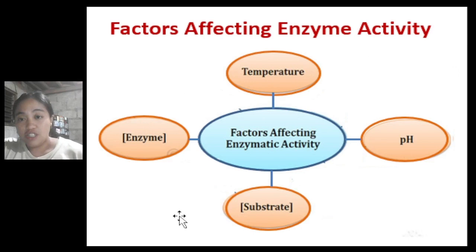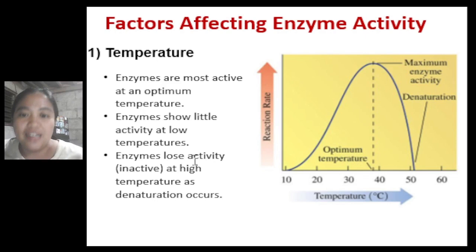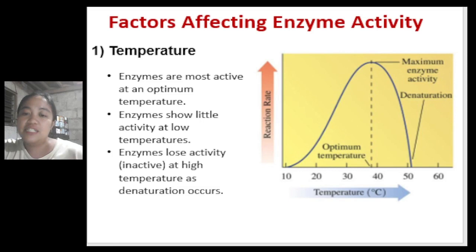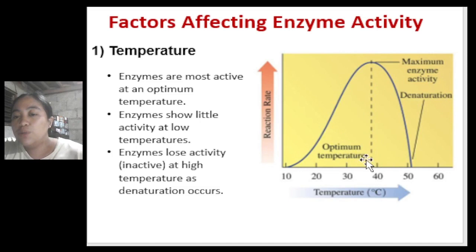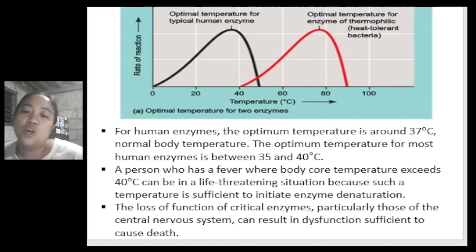Now let's discuss factors affecting enzyme activity. The first factor is temperature. Enzymes are most active at an optimum temperature, show little activity at low temperature, and lose activity or become inactive at high temperatures due to denaturation. At lower temperatures, enzyme activity slows down, while at high temperatures, the active site is altered. The optimum temperature for human enzymes is around 37 degrees Celsius — our normal body temperature — with a range of 35 to 40 degrees Celsius.